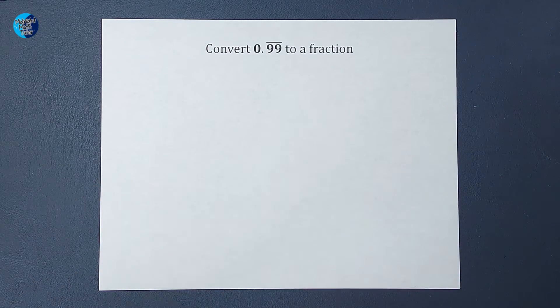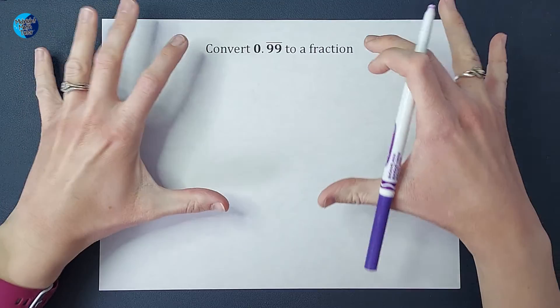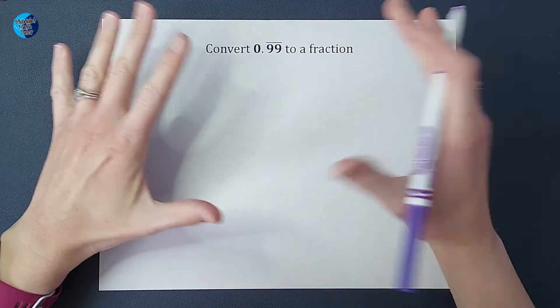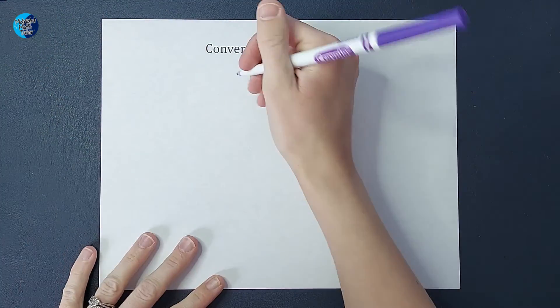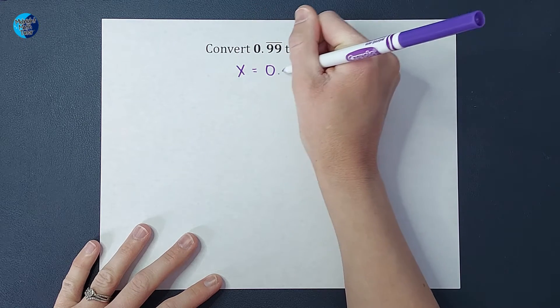I'll link a playlist for you, but we're also going to do it here. So when I am converting a repeating decimal to a fraction, the first thing I'm going to do is just set it equal to a variable. So I'm just going to say X equals 0.99 repeating.